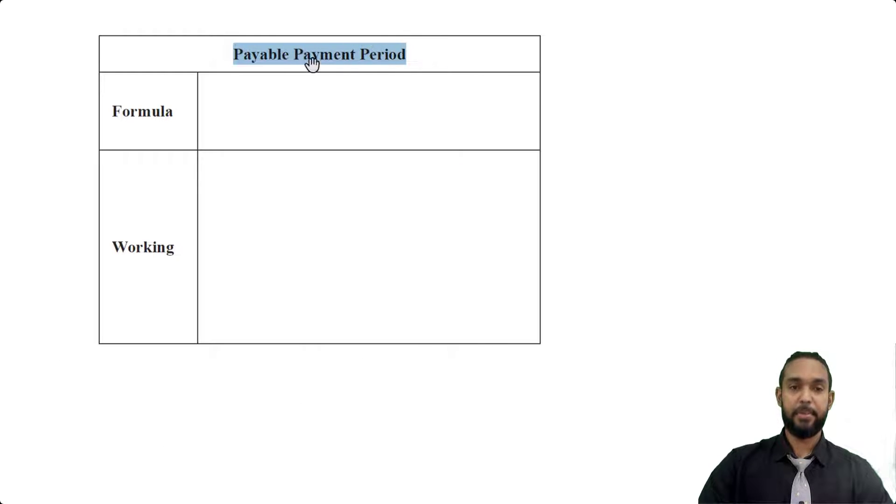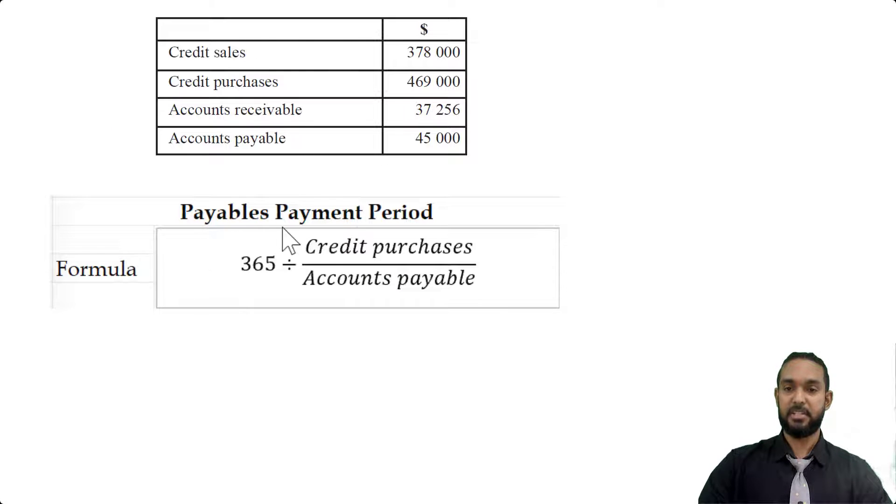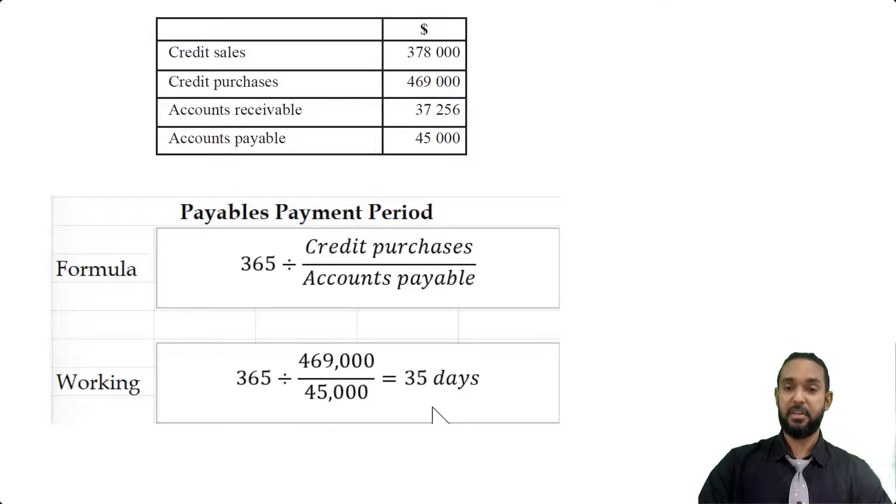So the next thing they want is the payables payment period. And of course, they want the formula and the working. So let's scroll back up to the information so we can use that to answer the question. So for the formula for the payables payment period is 365 divided by the credit purchases divided by accounts payable. So you can call this the creditors turnover and what credit purchases divided by accounts payable gives us is the number of times we repay our trade creditors within a given year. And to turn that into a number of days that we take to pay back the creditors, you take 365 and divide it by that turnover.